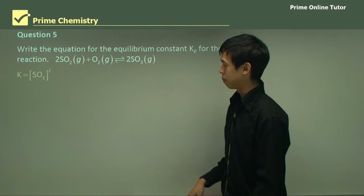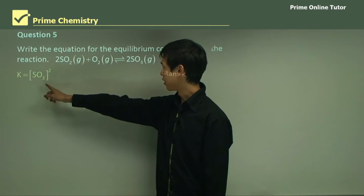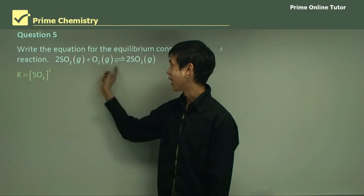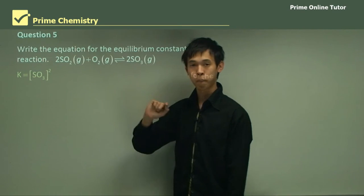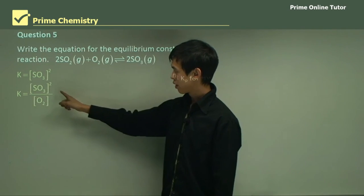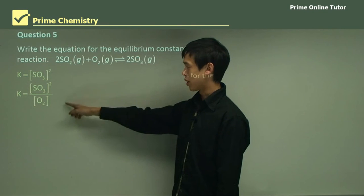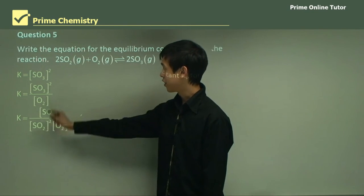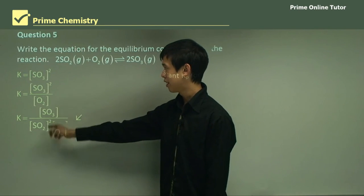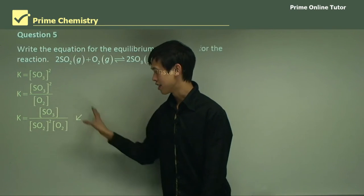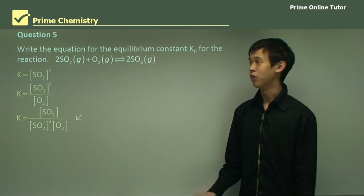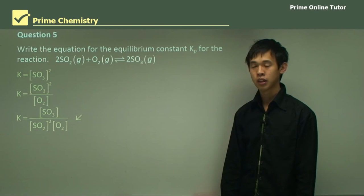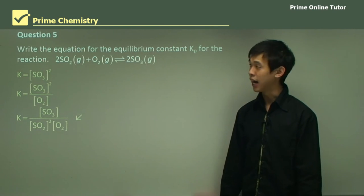So we'll build it up slowly, one by one. Product, so that's the first one that we write down. And you can see it's squared, because of that 2 here. Then it's over the reactant, so here's one reactant. There's a 1 here, so the power is just 1. And then here you've got the other reactant, squared, because of the 2 here. And so this is your equation for Kp for this particular reaction. It's fairly simple, so we'll move to something a bit harder now.